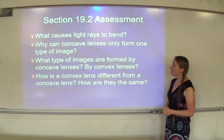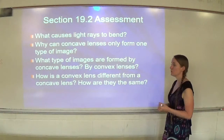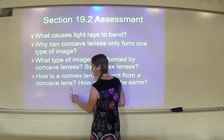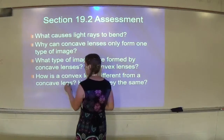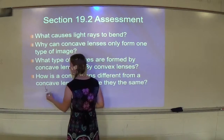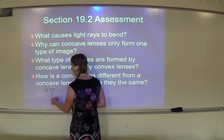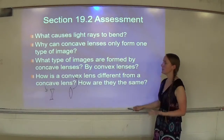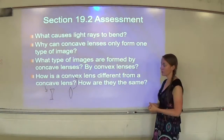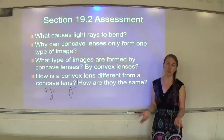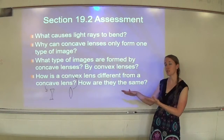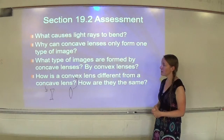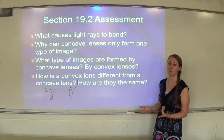How is a convex lens different from a concave lens? The difference is the shape. A convex lens is thickest in the middle, whereas a concave lens is thinnest in the middle — remember, it looks like you're going into a cave. How are they the same? Since they're both lenses, they are both transparent, meaning light passes through them rather than reflecting as with a mirror. You could also say they can both form virtual images.